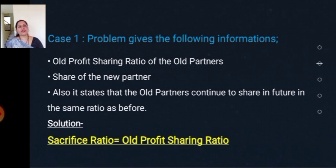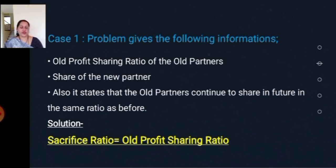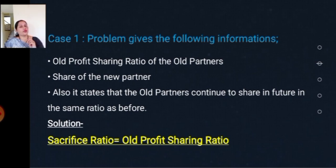Case one: the problem gives three pieces of information — the old profit sharing ratio of the old partners, the share of the new partner, and a statement that the old partners continue to share the future profits in the same ratio as before. In such a case, the sacrifice ratio is equal to the old profit sharing ratio. You need not do any calculation — straight away you can take the old profit sharing ratio itself as the sacrifice ratio, though we will verify this with an example.